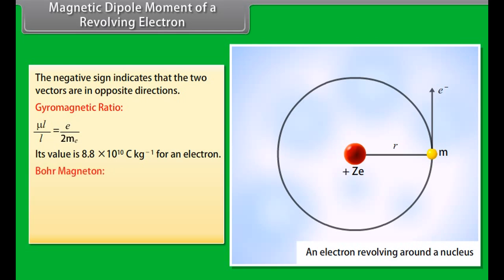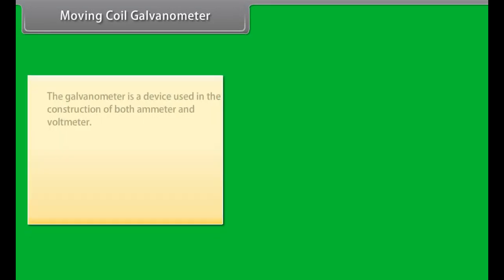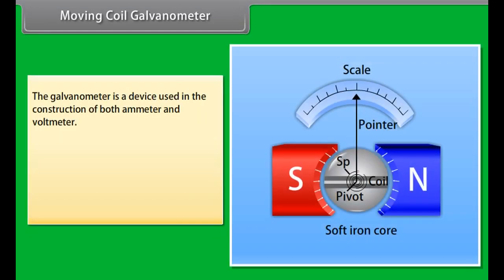Bohr magneton: Mu_B = E H upon 4 pi M_E. Its value is constant and equals 9.27 × 10⁻²⁴ A·m².